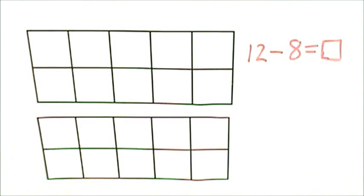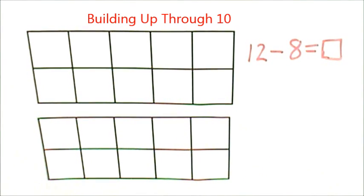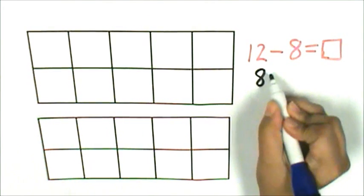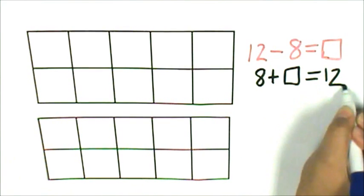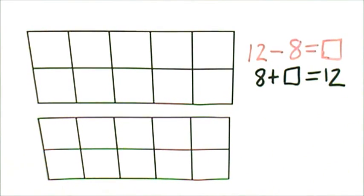Let's determine the difference of 12 minus 8 by building up through 10. We're going to write 12 minus 8 equals an unknown number as 8 plus an unknown number equals 12. That means I will get to 10 and then count on until I get to 12.